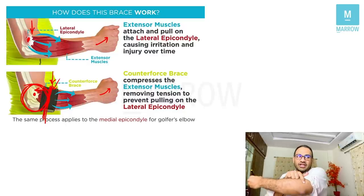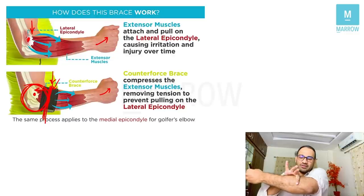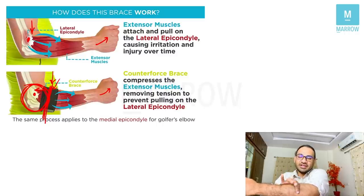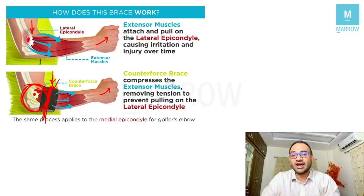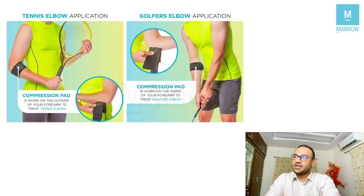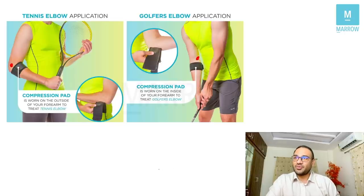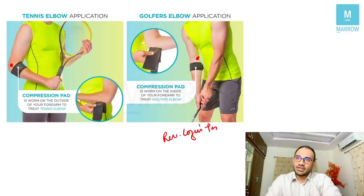Lateral epicondyle is the painful area. When you apply the brace distal to it, the muscle will contract only up to the brace and the problem area is spared. Without the brace, contracting the muscle transmits force to the lateral epicondyle. So counterforce brace for lateral epicondylitis is tennis elbow. Similarly, a counterforce brace can be used for medial epicondylitis, also known as golfer's elbow. The test for golfer's elbow is reverse Cozen's test.